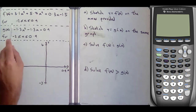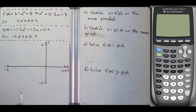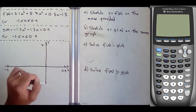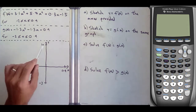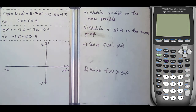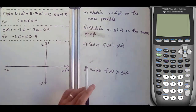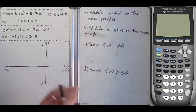We've been given one set of blank axes that cover the x domain from minus 2 to 0.9, and they've also given us the range of y — minus 3 as the y minimum and 4 as the y maximum for the view window. The questions are: sketch y equals f of x on the axes provided; part b, sketch y equals g of x on the same graph.